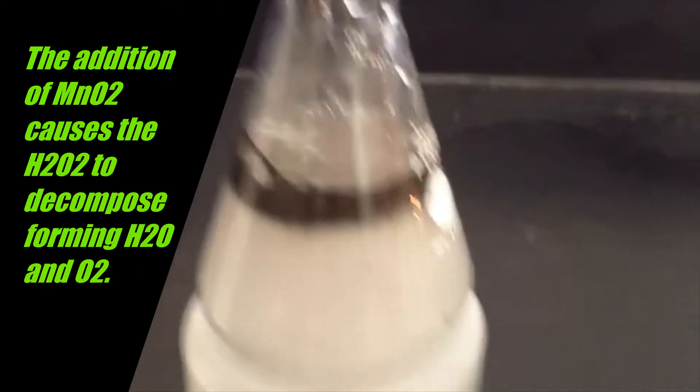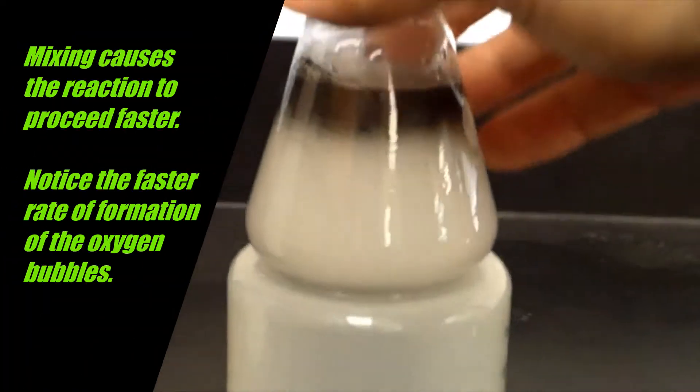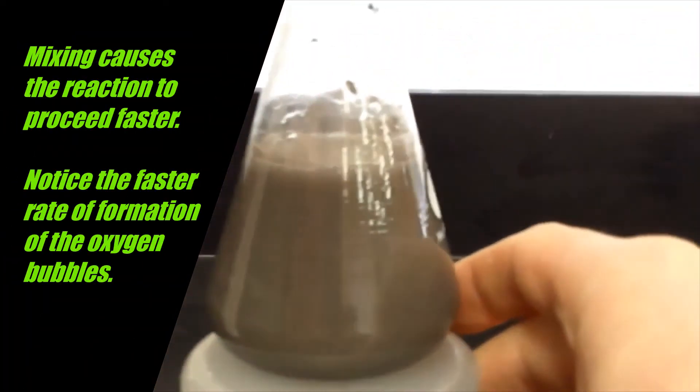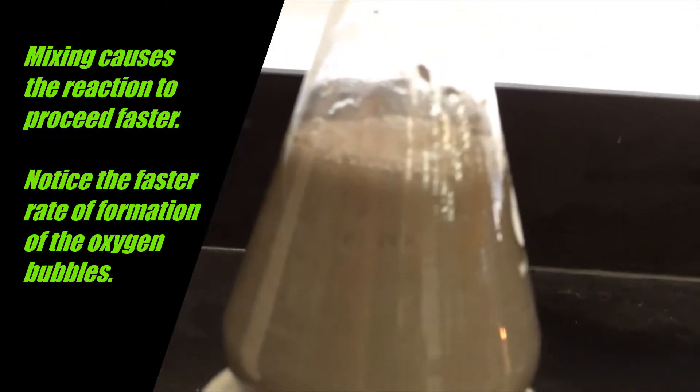Here you can see the black manganese dioxide at the top of the liquid and can notice the formation of bubbles. Swirling the flask will increase the collision rate between particles and speed up the process significantly. You can see the rate of bubbles formation really picking up.